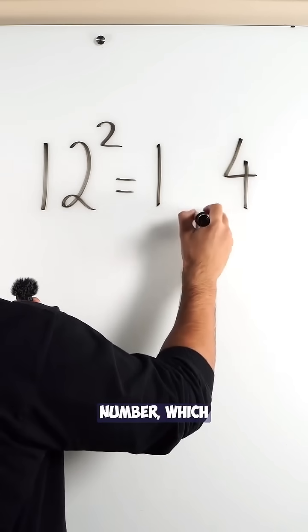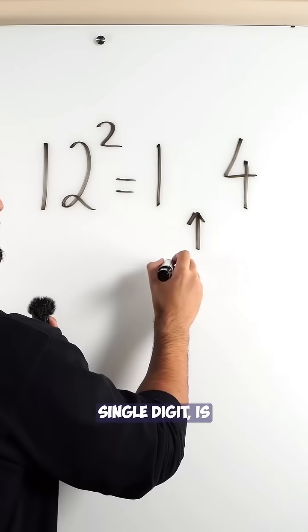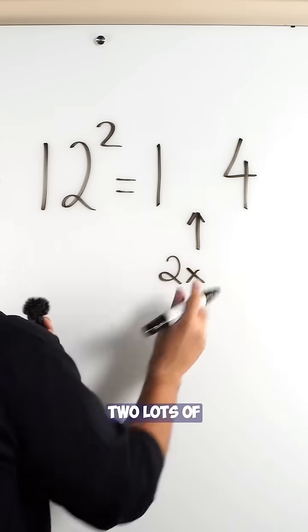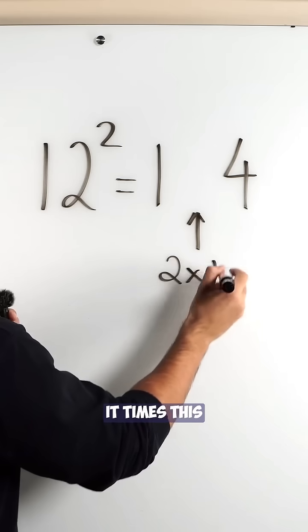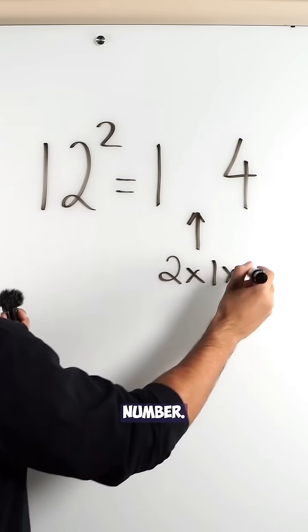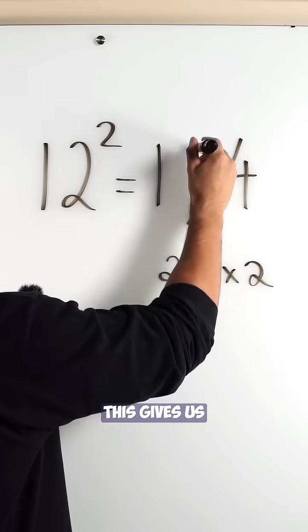Then the middle number, which can only be a single digit, is 2 lots of this number times this number. This gives us 4.